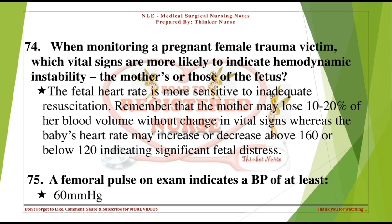When monitoring a pregnant female trauma victim, which vital signs are more likely to indicate hemodynamic instability — the mother's or those of the fetus? The fetal heart rate is more sensitive to inadequate resuscitation. The mother may lose 10–20% of her blood volume without a change in vital signs, whereas the baby's heart rate may increase above 160 or decrease below 120, indicating significant fetal distress.